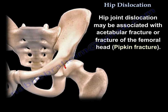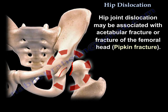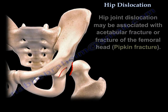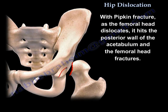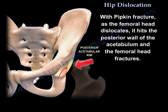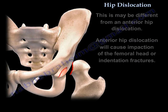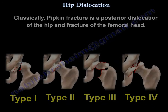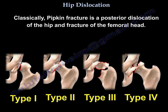Hip joint dislocation may be associated with an acetabular fracture or femoral head fracture, which is called a Pipkin fracture. In a Pipkin fracture, as the femoral head dislocates, it hits the posterior wall of the acetabulum and the head fractures. This differs from anterior hip dislocation, which may cause impaction or indentation fractures of the femoral head. Classically, a Pipkin fracture is a posterior dislocation of the hip with fracture of the femoral head, and there are four types.